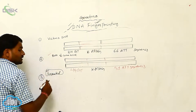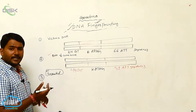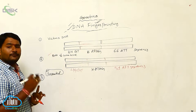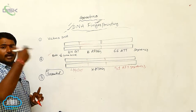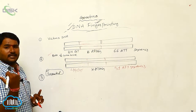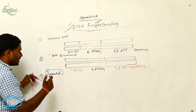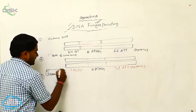Suspected means you have identified a person and you have doubt on him, then you have to collect the DNA from him. So then it is called as suspected DNA.